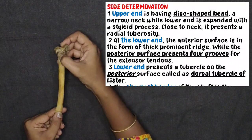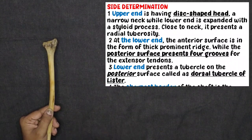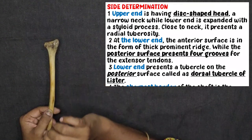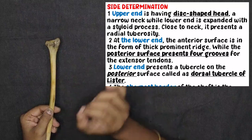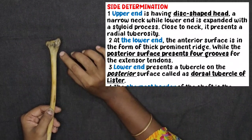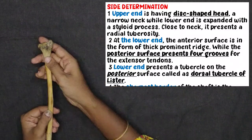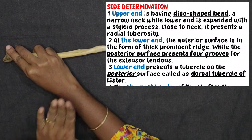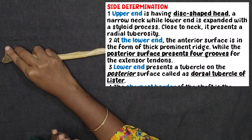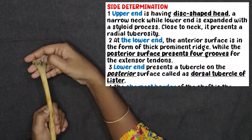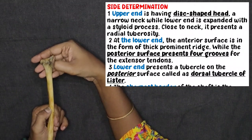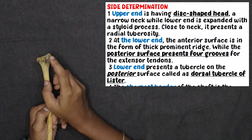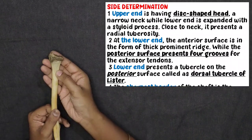On the posterior surface of the lower end, there are 4 grooves. These grooves are for tendons — specifically the extensor tendons of the posterior compartment of the forearm. The muscle tendons pass through these 4 grooves in the posterior surface.